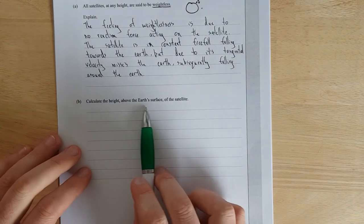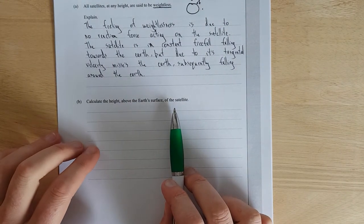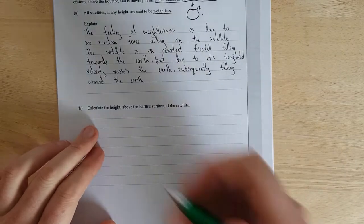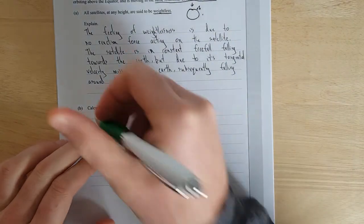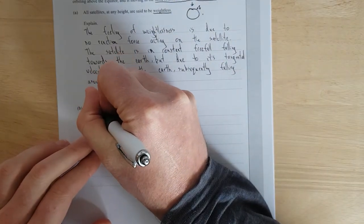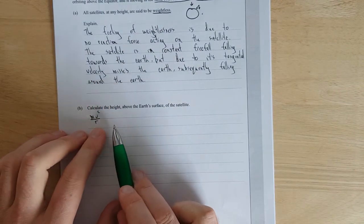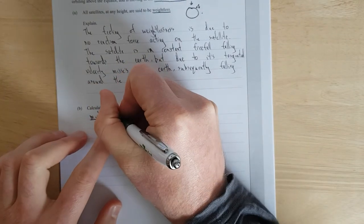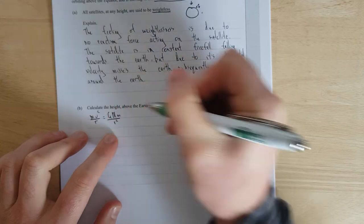Right, what do we have next? Calculate the height above the Earth's surface of this satellite. So we have, we'll assume it's going in a circle. So anything that moves in a circle needs a circular force to move in a circle. So we're going to use mv² over r. And then we ask ourselves, what is the force that holds the satellite in place? And that's gravity. So the formula for the gravitational force is big G, big M, little m over r².